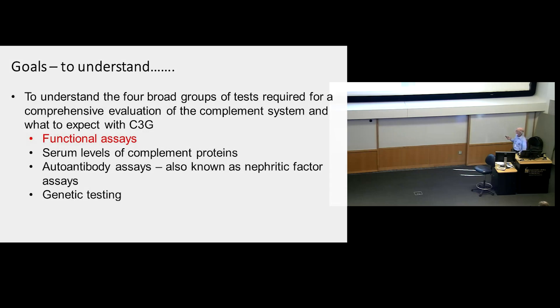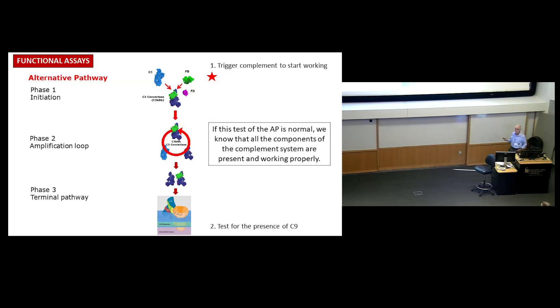Here's our alternative pathway. When we do a functional assay, all we do is trigger the complement system. We trigger it at the top, forget about everything in the middle, and we look and see what we get at the bottom. If we trigger the top and get the expected readout at the bottom, we infer that all the pieces are there and it's working. We do that on all of you for the alternative pathway and the classical component.